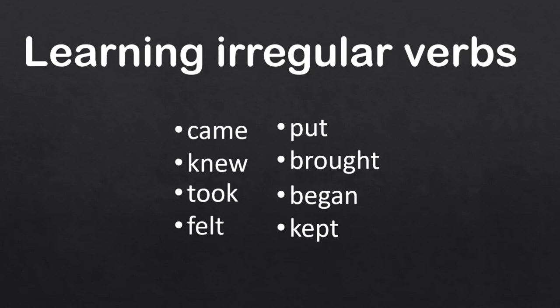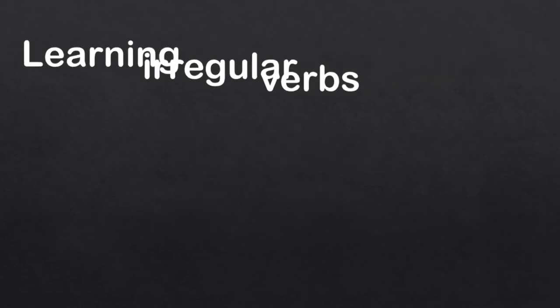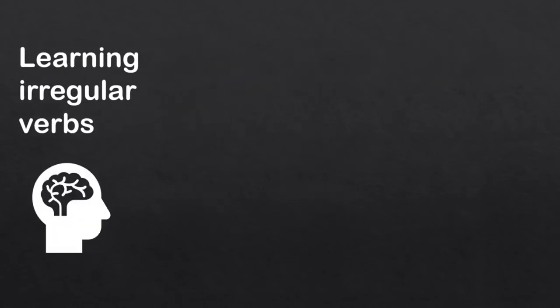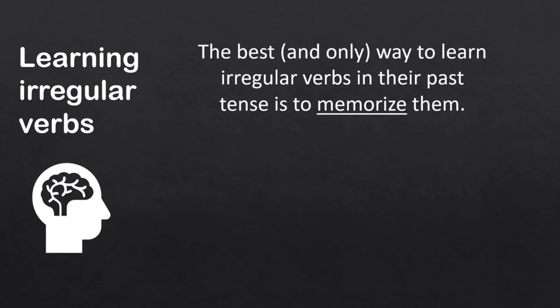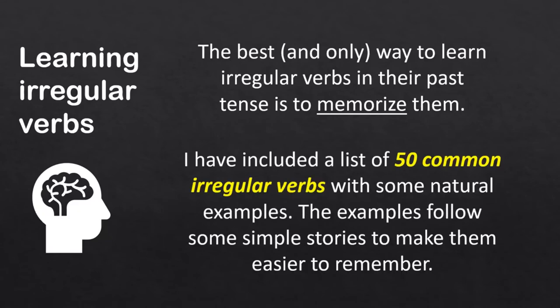Learning irregular verbs: The best and only way to learn irregular verbs in their past tense is to memorize them. A list of 50 common irregular verbs with natural examples is provided. The examples follow some simple stories to make them easier to remember.